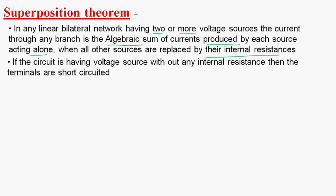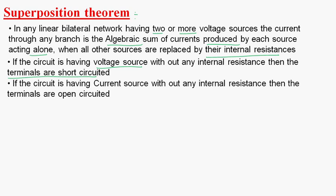So while solving the circuit by using the superposition theorem, if you find any voltage source, then its terminals are short-circuited. If you find any current source, then its terminals are open-circuited.